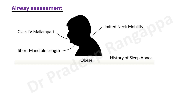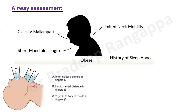When contemplating intubating a patient, one needs to quickly look for possible difficulty in intubation. Quick indicators include obesity and limited neck mobility due to ankylosing spondylitis, cervical spine fixation, or obesity. Most anesthesiologists are aware of the Mallampati score. If the patient is on BiPAP or CPAP with a history of sleep apnea, these all portend a difficult intubation.